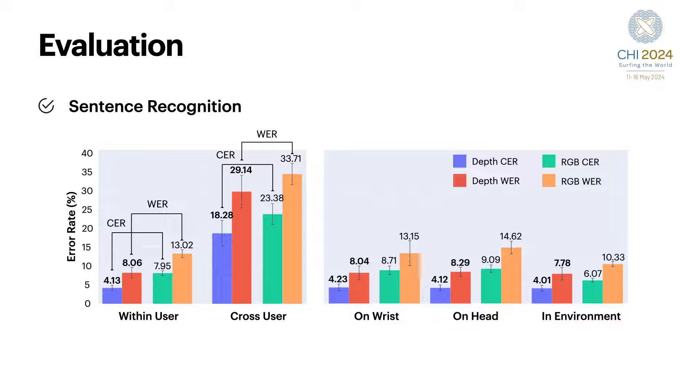In the cross-user validation, our approach demonstrated a decrease in WER and CER by 4.57% and 5% respectively, compared to the conventional method. Notably, each sensor location exhibited similar performance, indicating that sensor location does not significantly affect performance.